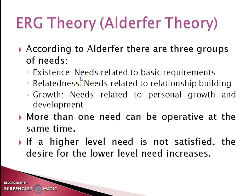A key difference from Maslow is that ERG theory has no hierarchy. ERG theory also proposes that more than one need can be operative at the same time — all three needs could be focused by an individual simultaneously. Additionally, if a higher-level need is not satisfied, the desire for lower-level needs increases, as a person seeks satisfaction at a lower level.